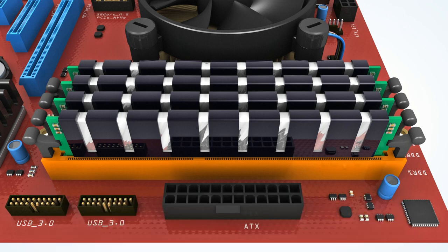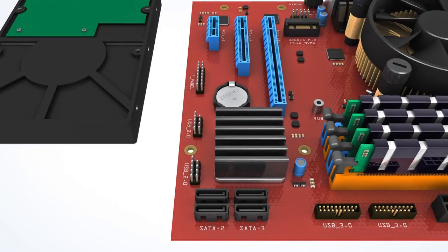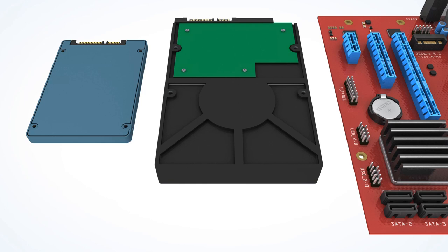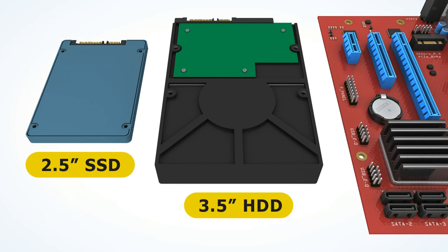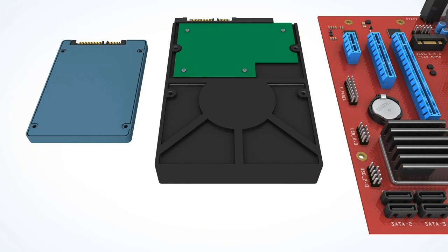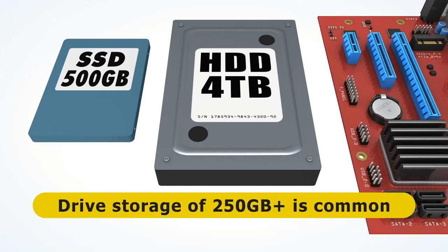As the contents of RAM are lost when power is removed, all computers require some non-volatile storage to retain their operating system, applications, and user data when switched off. For this purpose a desktop PC will be fitted with at least one solid state drive, abbreviated to SSD, or a hard disk drive, otherwise known as an HDD. SSDs store data on non-volatile memory chips, whilst hard drives read and write data to spinning magnetic platters. The capacities of SSDs and hard drives are measured in gigabytes and increasingly terabytes, with a modern PC usually having a main or system drive of at least 250 gigabytes in capacity.